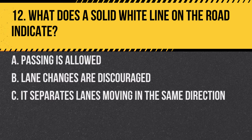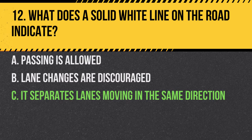Question 12. What does a solid white line on the road indicate? a. Passing is allowed. b. Lane changes are discouraged. c. It separates lanes moving in the same direction. Answer: c. It separates lanes moving in the same direction. A solid white line indicates that you should stay in your lane.